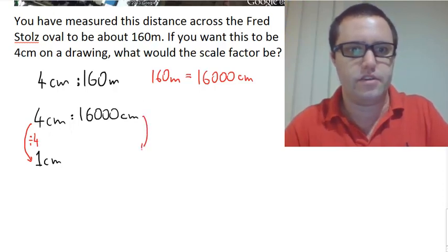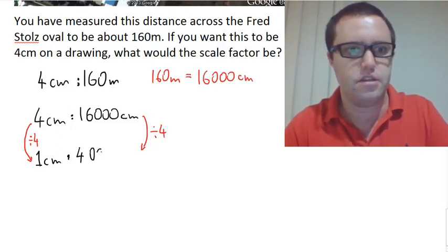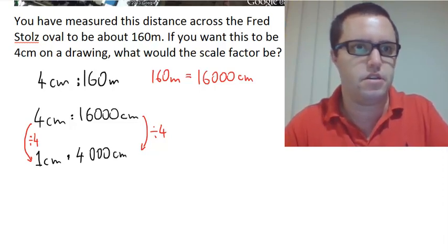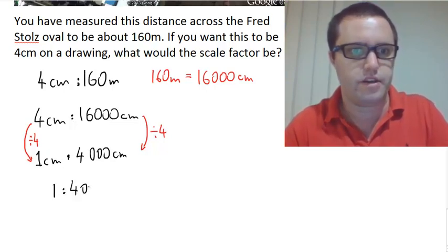That means on this side of our scale, we're going to have to divide by 4. 16,000 divided by 4 equals 4,000 centimeters.